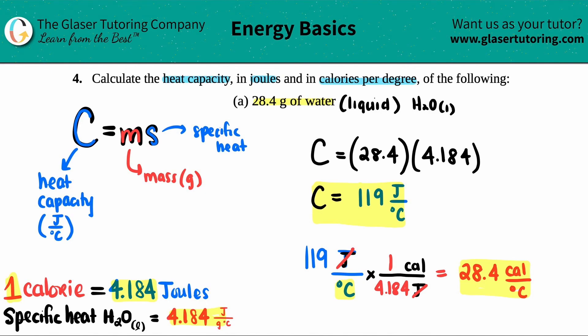119 joules per degree Celsius is the same thing as 28.4 calories per degree Celsius. That's it! Hope this helps. Let me know in the comments what you think. Remember this formula and the units that you need to have them in.